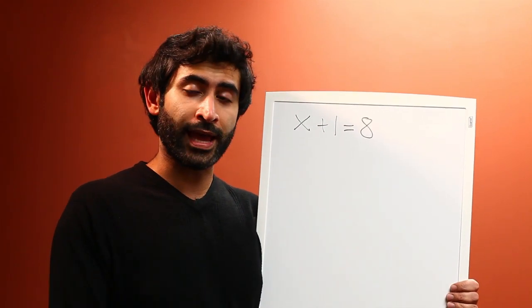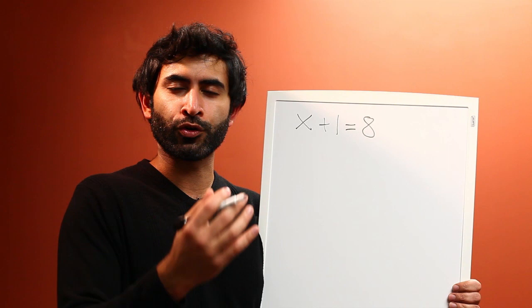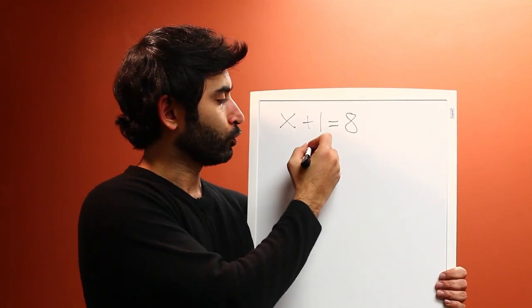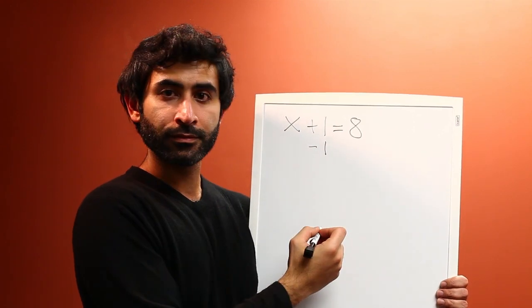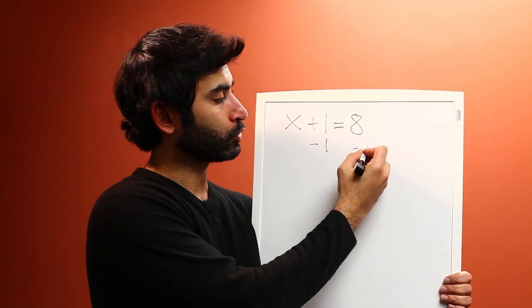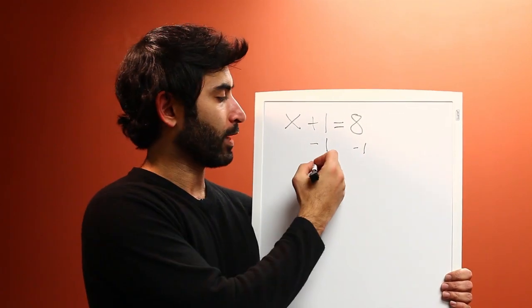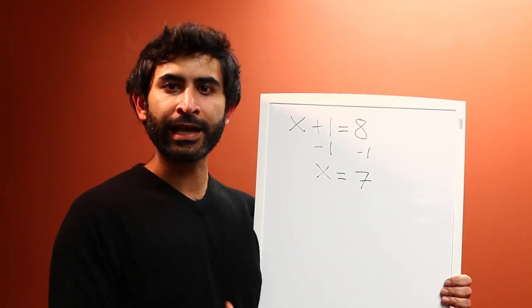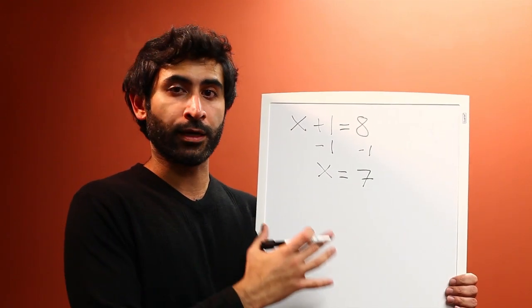Let's do it in a way which is methodical, so you can do it this way with any equation out there. This is how you do it. You subtract each side by 1, so minus 1 here, minus 1 here, and you get X equals 8 minus 1, which is 7. That is how you solve an algebraic equation.